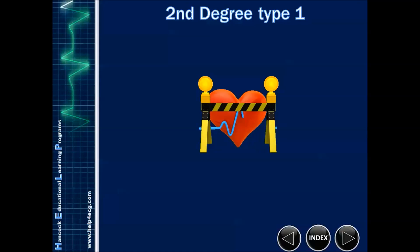Let's take a look at second degree type one. In all of our heart block instances, we're going to be using an analogy of roadblocks and speed bumps. So let's start with second degree type one.